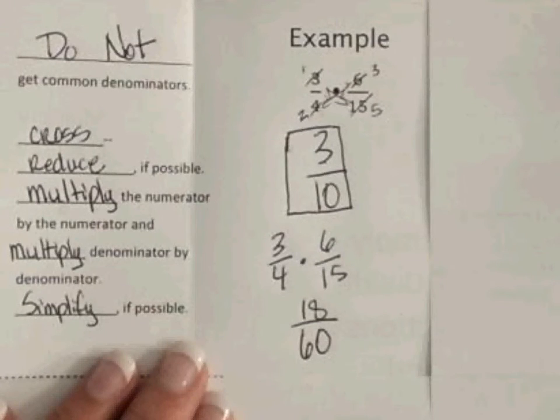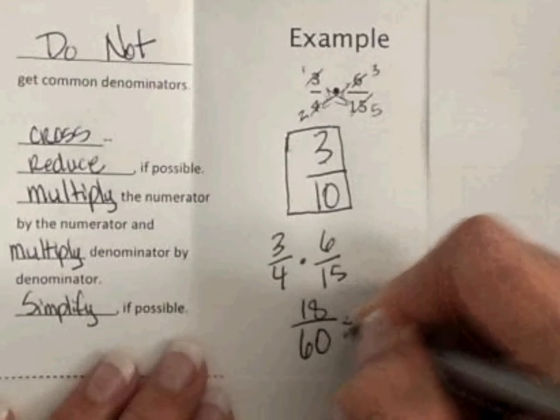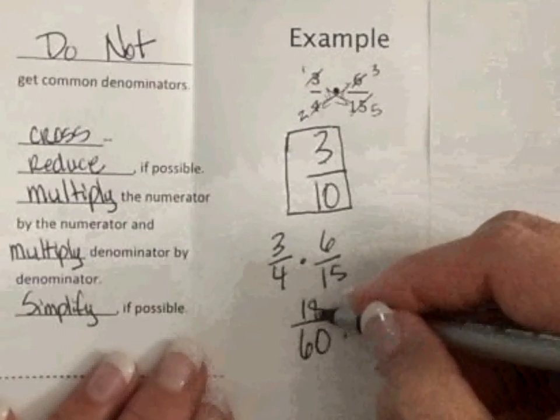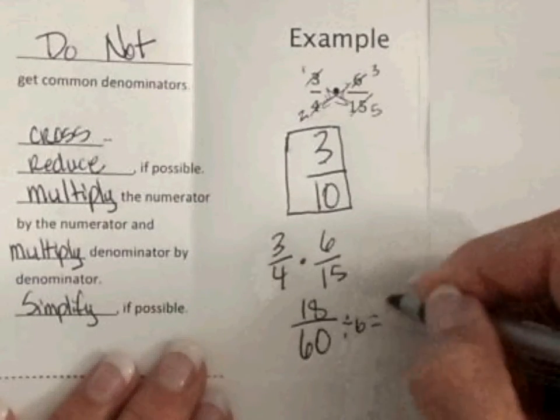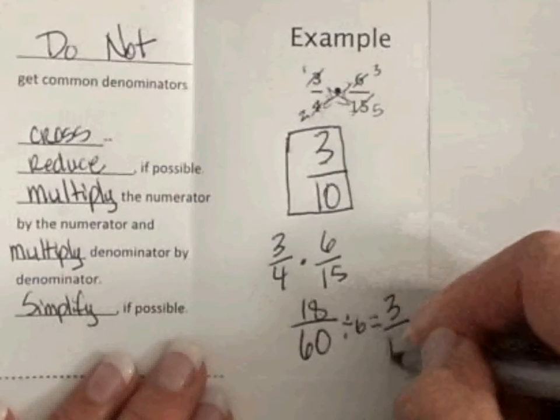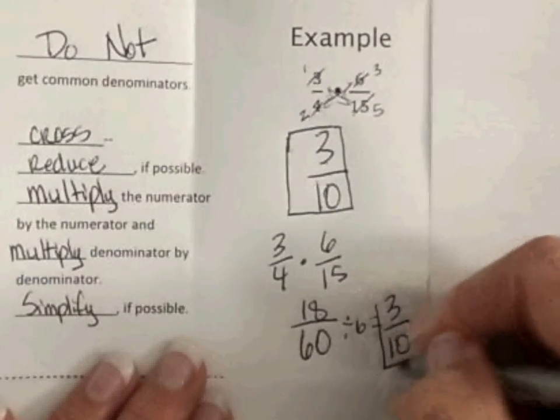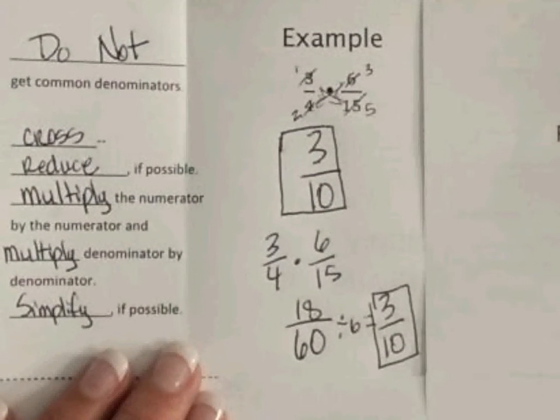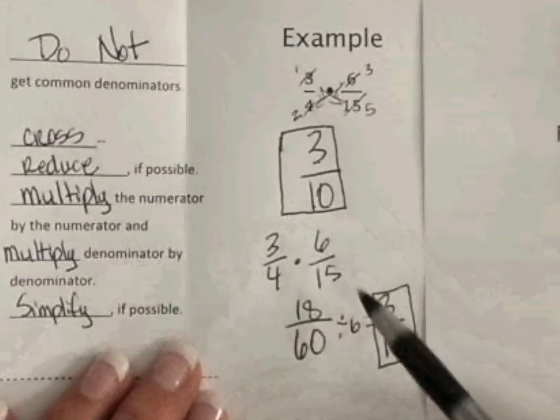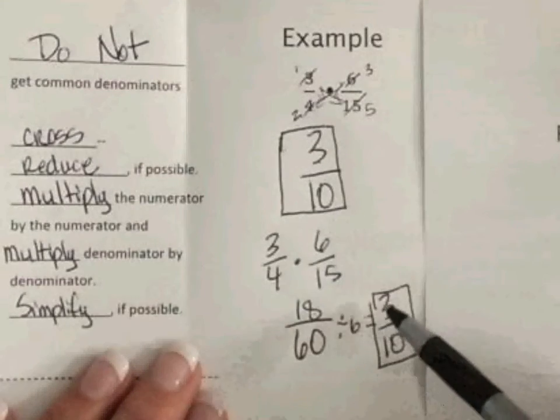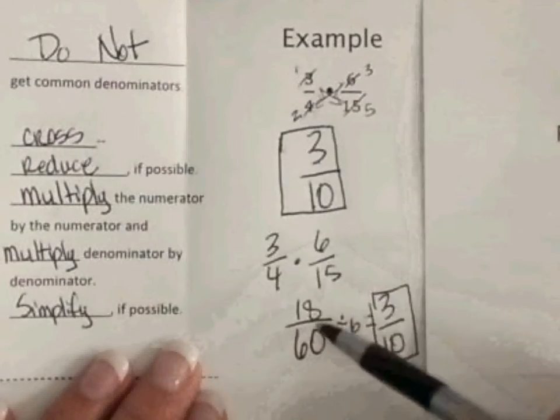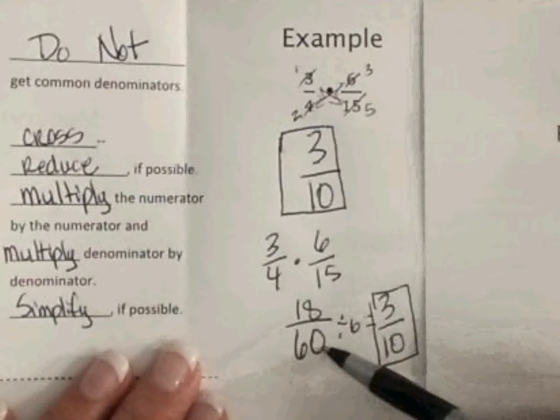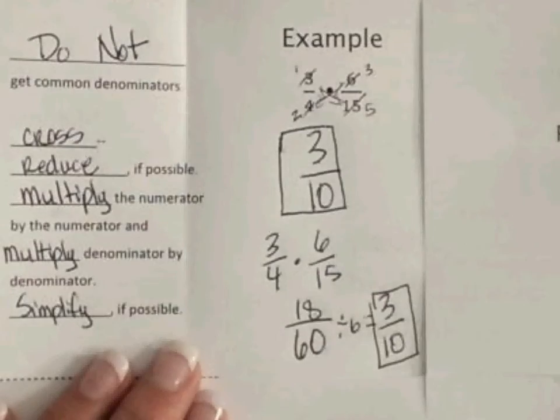You will see she and I, we cross-reduce first just because it's easier and your numbers get smaller first. But, you can always do it at the very end. Just always, always simplify. That's a place that people mess up on. They don't always simplify. So, either way, you choose a method that works for you. While Ms. Nelson was talking, I actually did the problem, the original, without cross-reducing. So, you see, three times six is eighteen. Four times fifteen is sixty. I know six goes into both eighteen and sixty. So, I did simplify. And you can see I got the same answer.